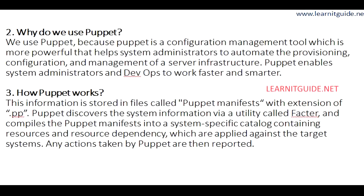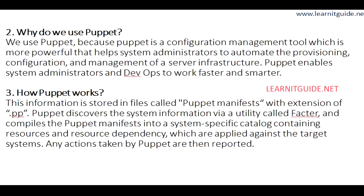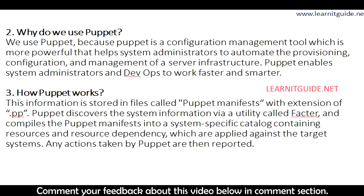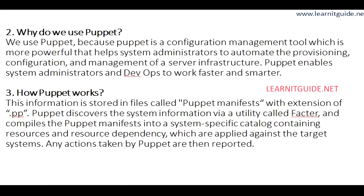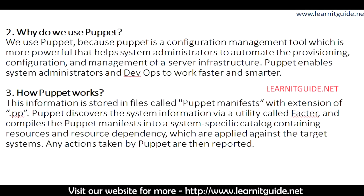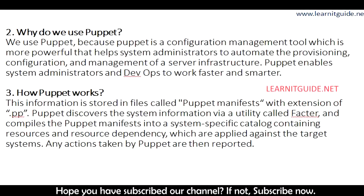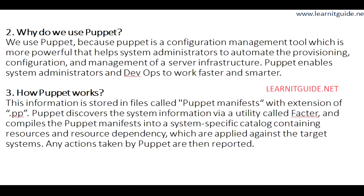Now, how Puppet works. Like every management tool, Puppet has a centralized master server where all the configuration states are defined. According to that, the client agents will react. This information is stored in a file called a Puppet manifest with the extension .pp — PP stands for Puppet policy.